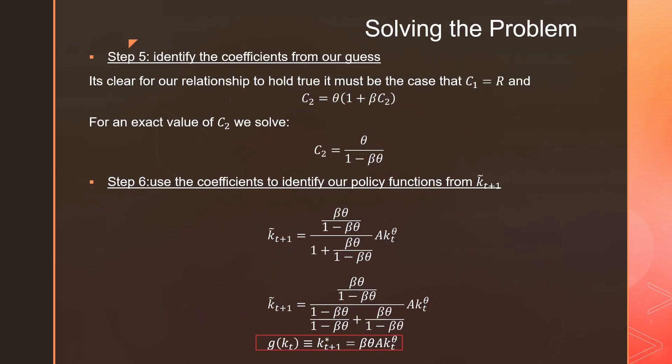So step number five is we're going to identify our coefficients from our guess. So it's clear from our relationship that it must be true that C_1 must be equal to R and C_2 must be equal to theta times (1 plus beta C_2). For the exact value of C_2, we solve that as theta over (1 minus beta theta).